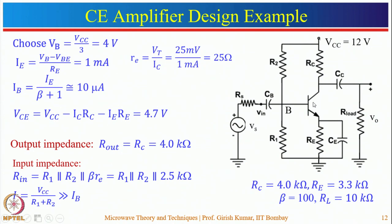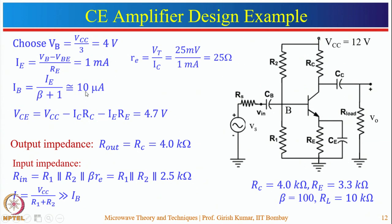For the common emitter amplifier example using voltage divider bias with supply voltage Vcc = 12 V, the operating point is chosen by setting Vb = Vcc/3 = 4 V. The emitter voltage is 4 − 0.7 = 3.3 V. Dividing by the emitter resistance Re gives an emitter current of 1 mA. The emitter current equals (β + 1)·Ib, from which the base current is calculated as 10 µA.